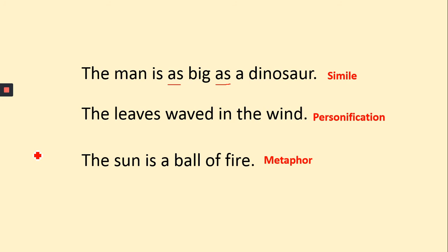The second one: 'The leaves waved in the wind.' How do you know this is personification? Because of the word 'waved.' Leaves are an inanimate object and they can't really wave, because waving is a human quality. However, they've given this quality to the inanimate object in their writing, which means it's known as personification — and it makes the writing more exciting.